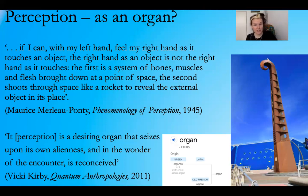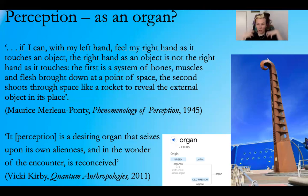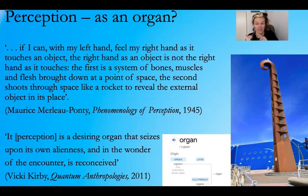Looking at a more recent text — Vicki Kirby's book Quantum Anthropologies — she talks about this idea of an organ of perception. She says it is 'a desiring organ that seizes upon its own alienness and in the wonder of the encounter is reconceived.' This description should sound relevant and familiar after a few weeks of thinking about making strange. The idea of seizing upon your own alienness and being reconceived is about that shift in perception. Keep in mind also the word 'alien,' because it is related to the concept of strange — not the same, but related.